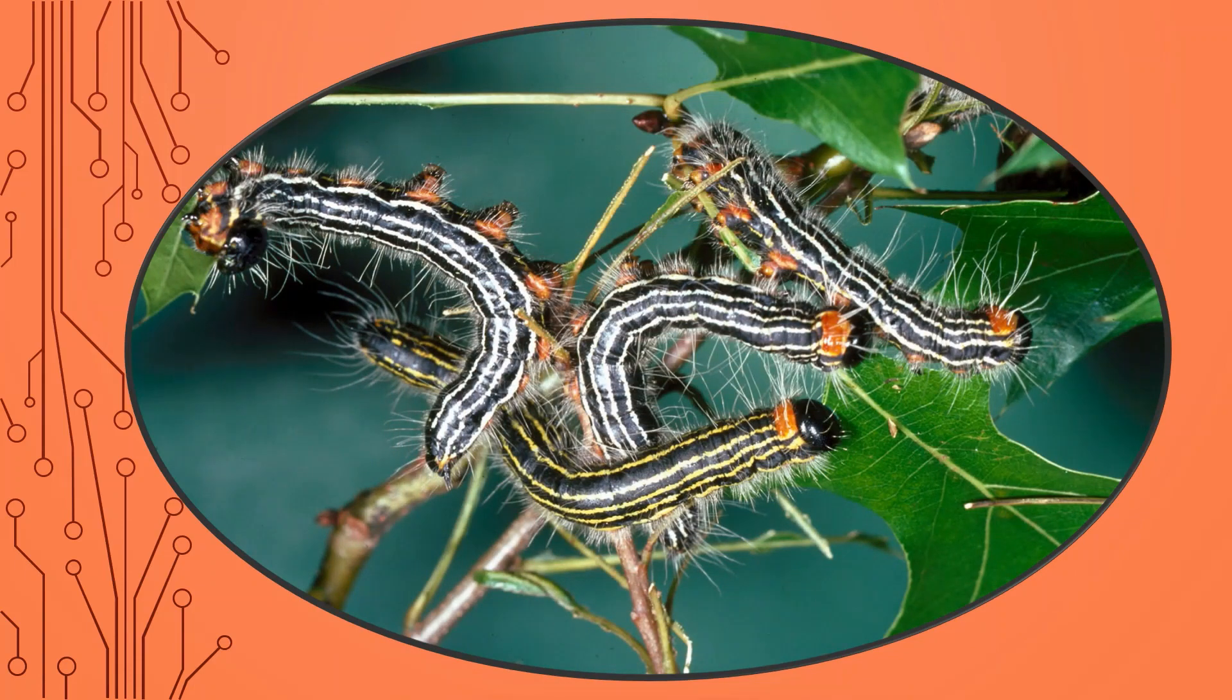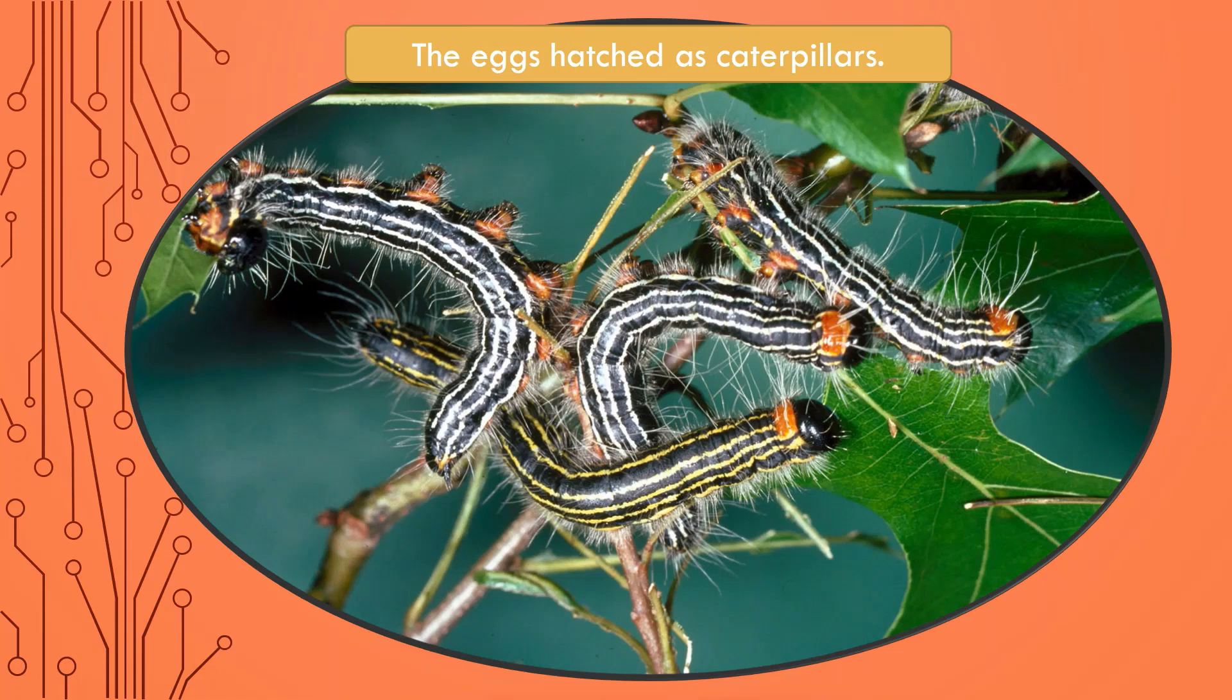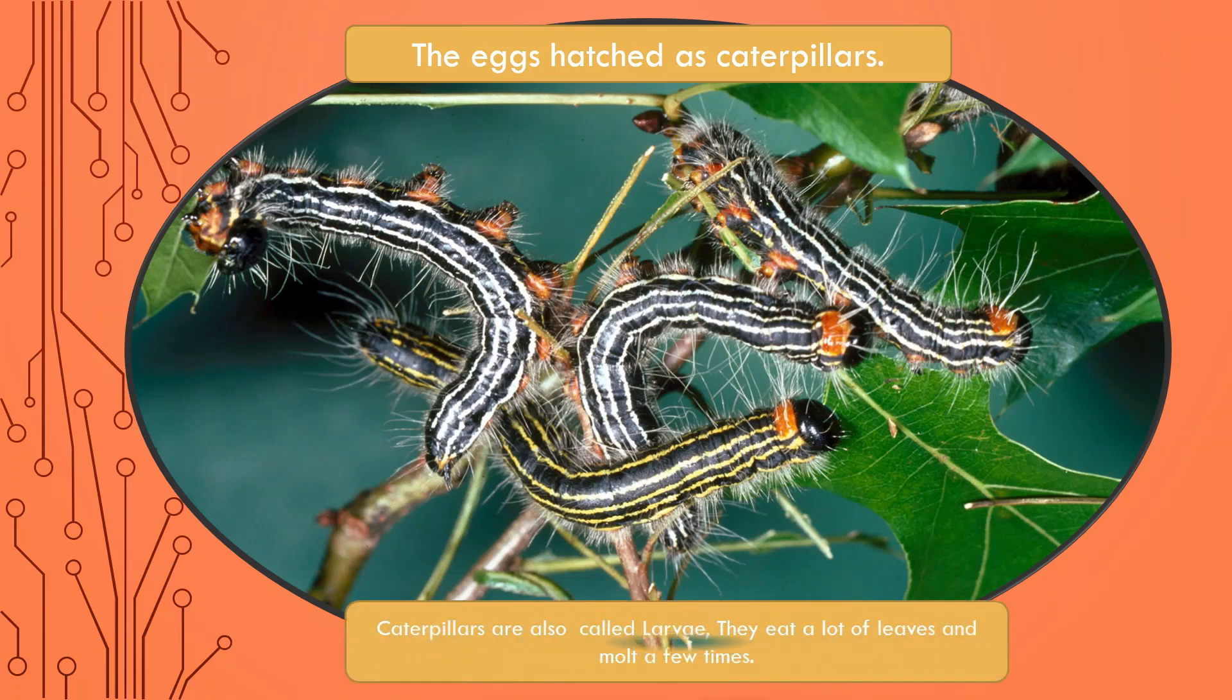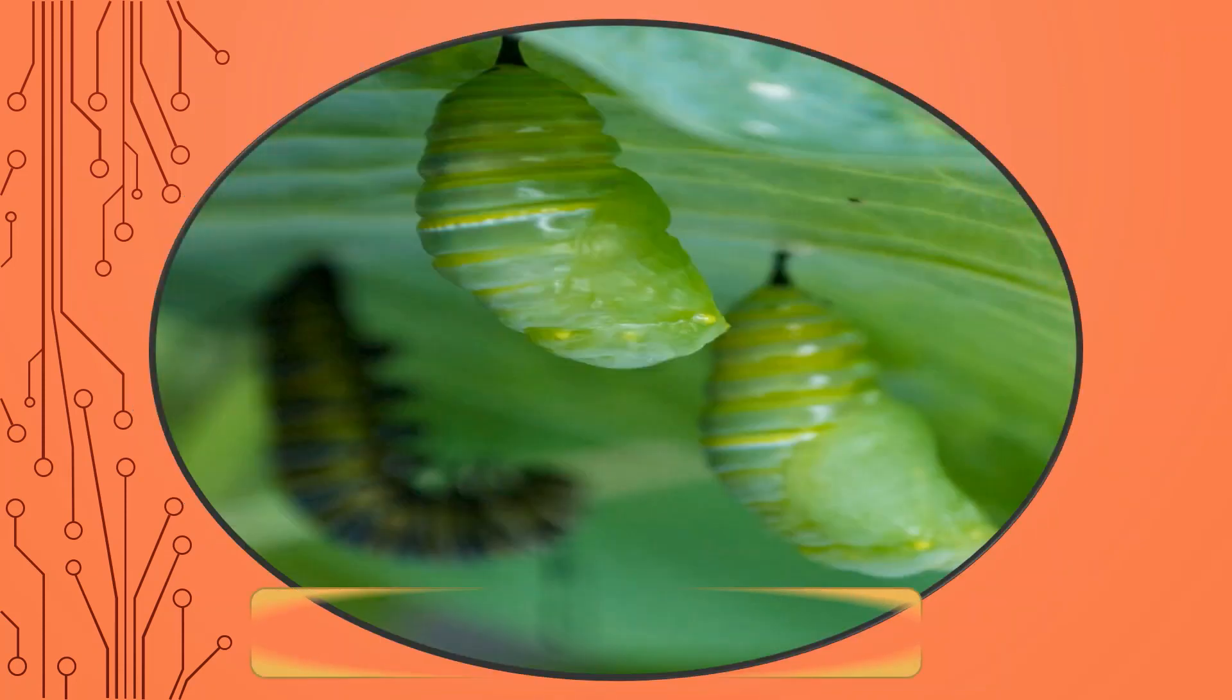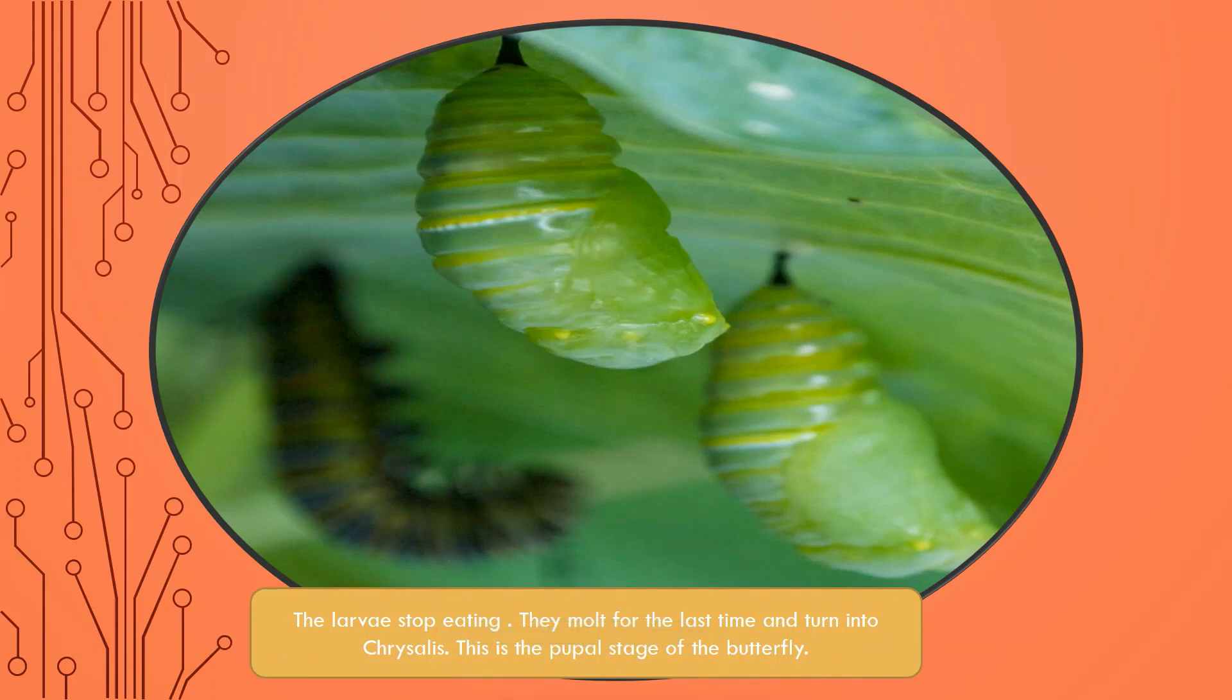And the eggs will hatch and become caterpillars. Caterpillars are also called larvae. They eat a lot of things and molt a few times. The larvae stop eating, they molt for the last time and turn into a chrysalis. This is the pupal stage of a butterfly.